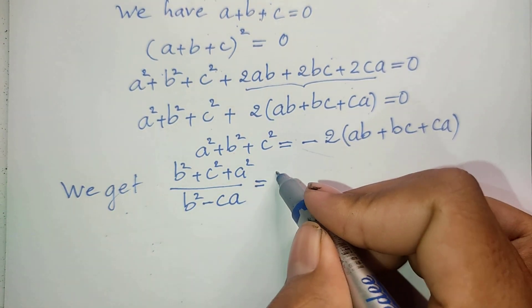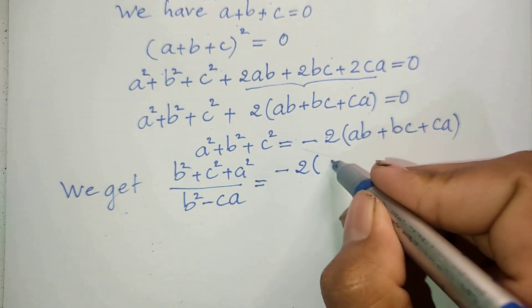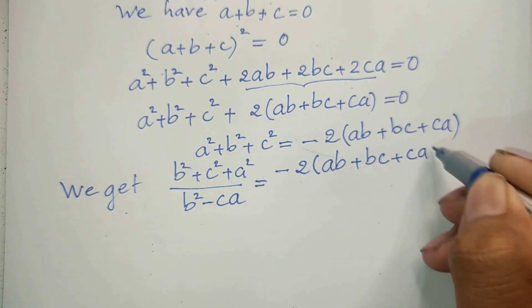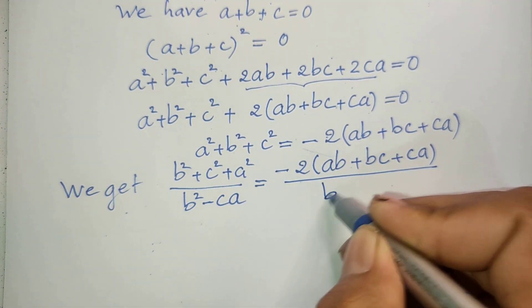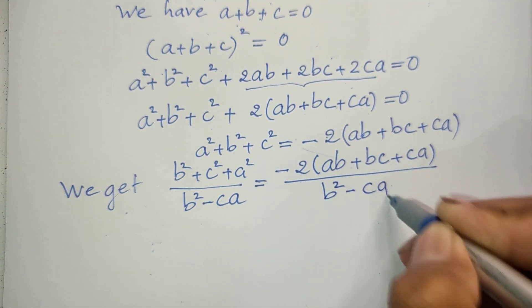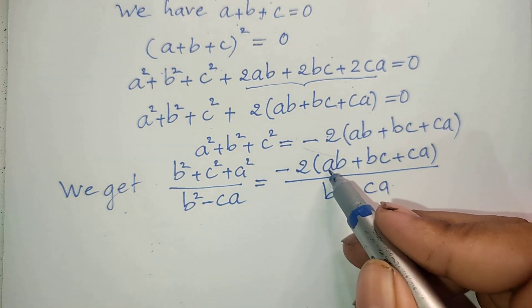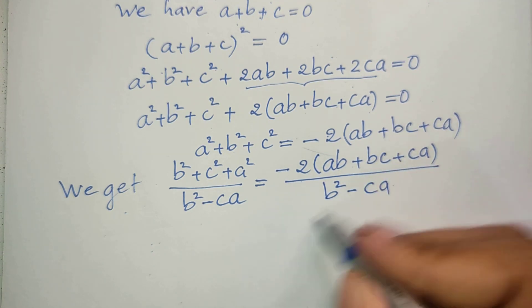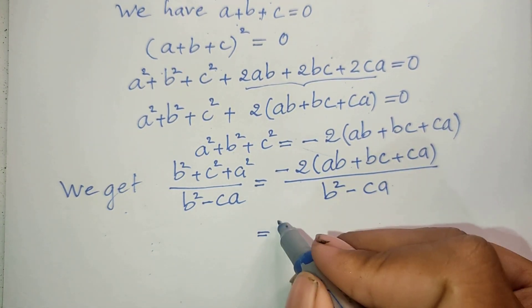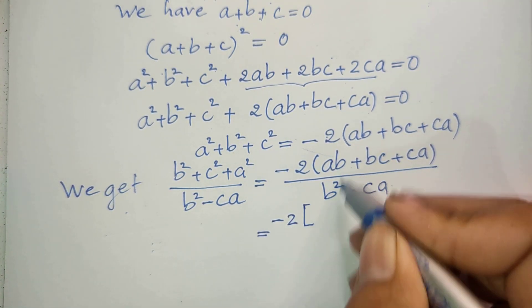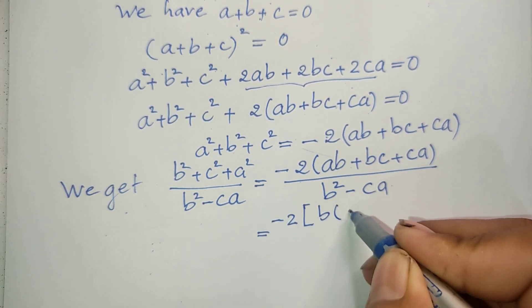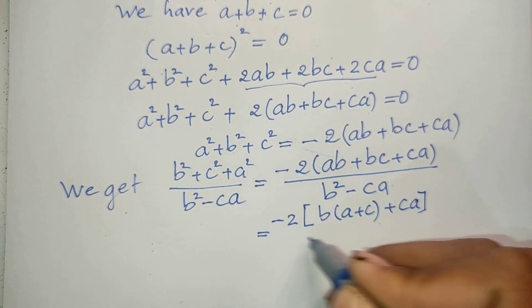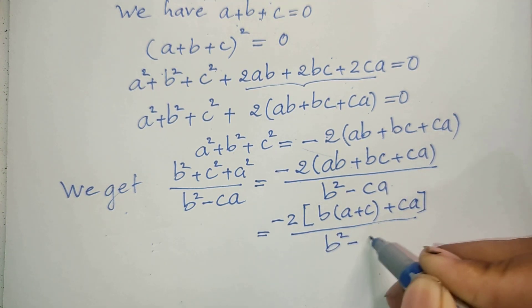Now I focus on the numerator: negative 2 times ab plus bc plus ca, divided by b squared minus ca. For the terms ab plus bc, I factor out b, giving b times a plus c, plus ca. So the expression becomes negative 2 times b times a plus c plus ca, divided by b squared minus ca.